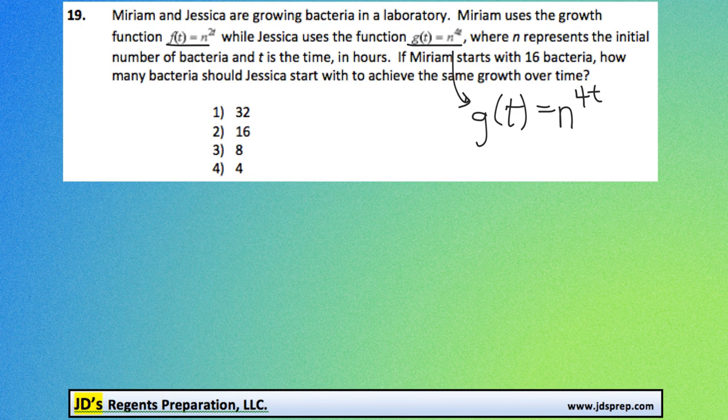If Miriam starts with 16 bacteria, how many bacteria should Jessica start with to achieve the same growth over time? Now we need to figure out what we're talking about with 16 bacteria. It says Miriam starts with that amount, and we know n represents the initial number of bacteria.